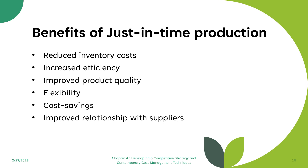JIT production also leads to improved relationships with suppliers, requiring close collaboration to ensure timely delivery of materials and components. Failure to receive raw materials on time creates problems with customer obligations. This collaboration can lead to long-term supplier partnerships. JIT production and the just-in-time system are covered in more detail in Chapter 6, same as total quality management.